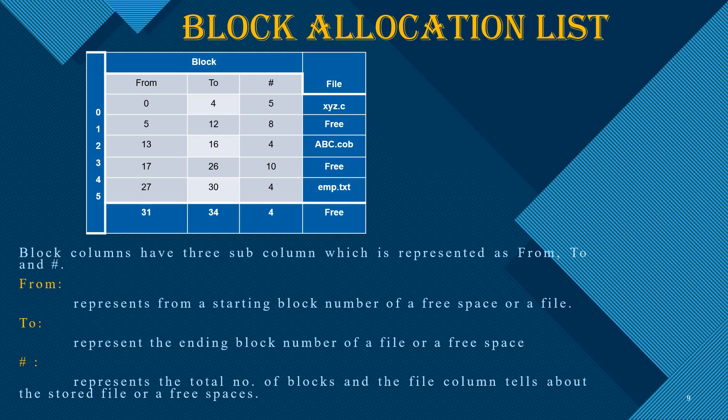Here, six processes are available: Process 0 through Process 5. Process 0 starts at 0 and ends at 4. The file names are given as x, y, z. Process 1 has a memory space size of 8, and a free block will be allocated. Partition 3 and Partition 4 memory spaces are also considered.